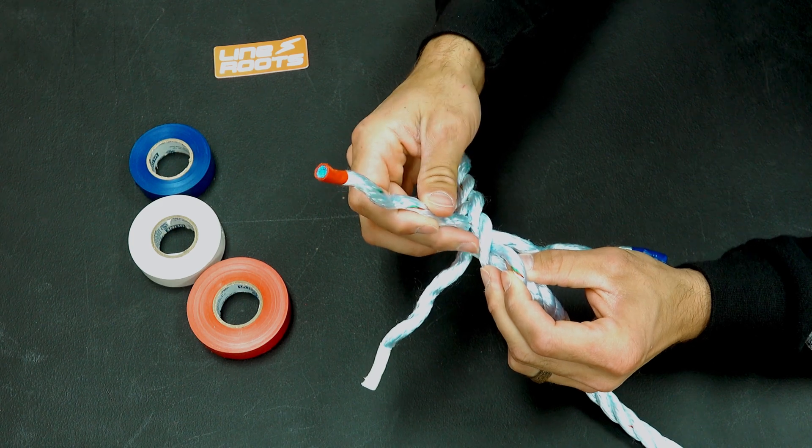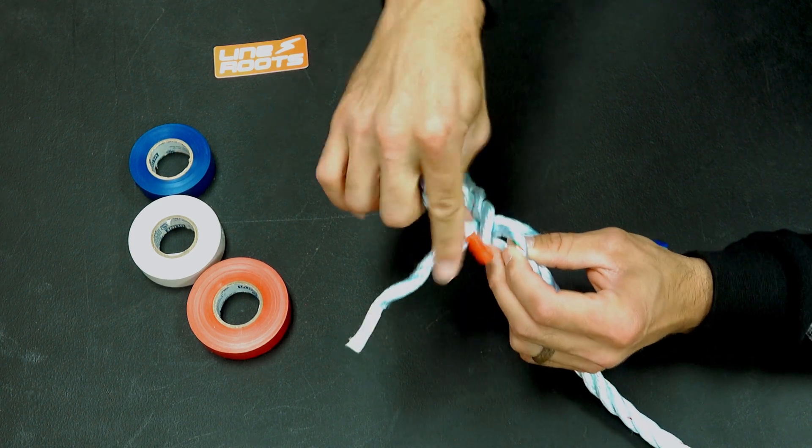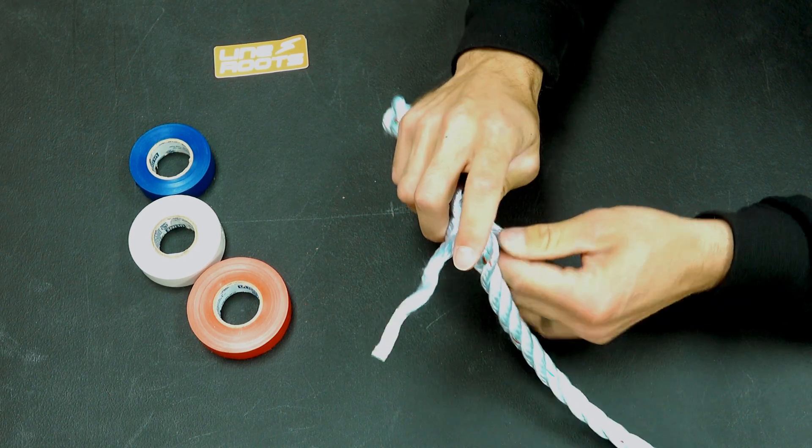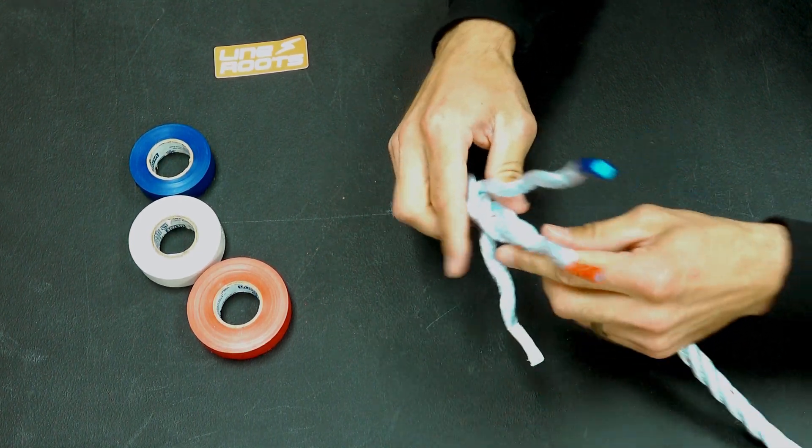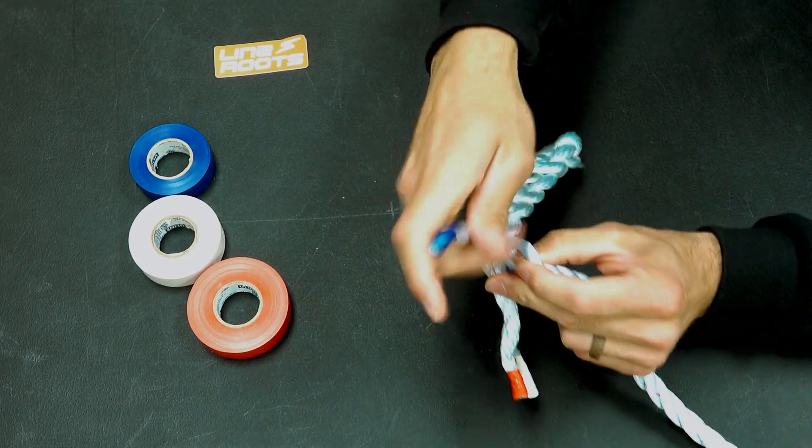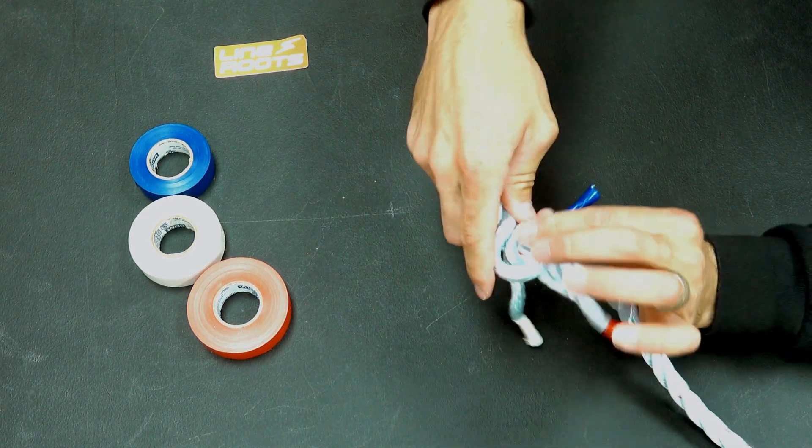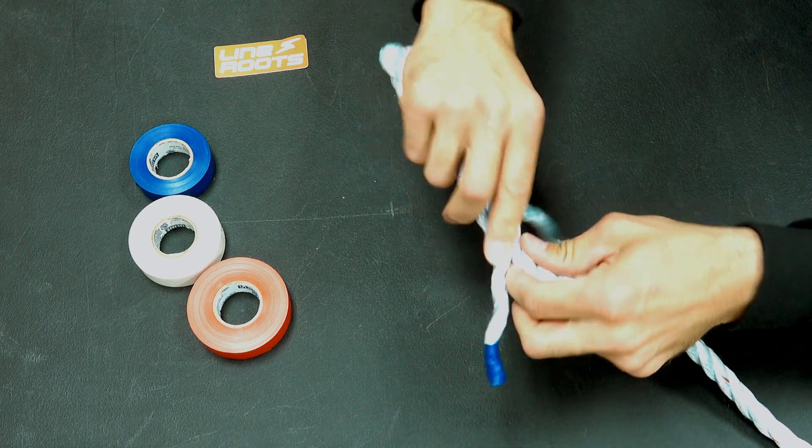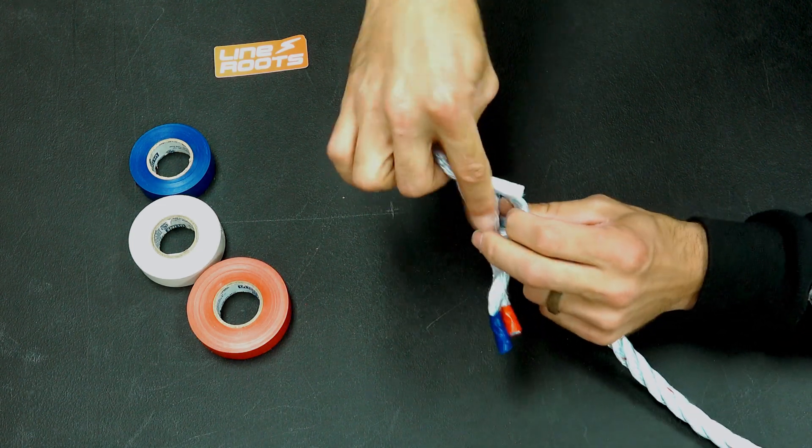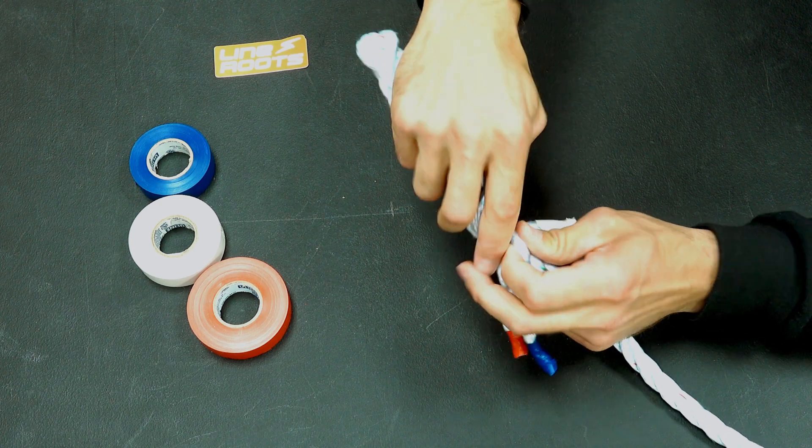I'm going to start with my red one. I'm going to go up and over this strand underneath this strand. Blue up and over. My white up and over this strand and underneath of this one.